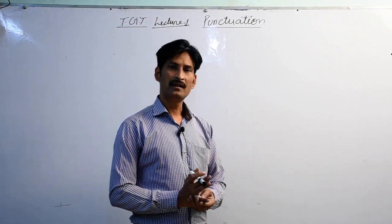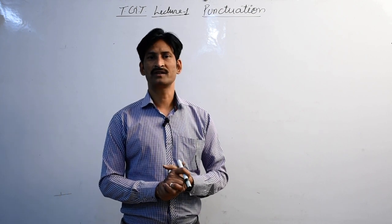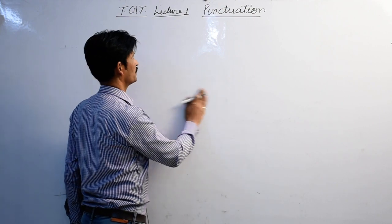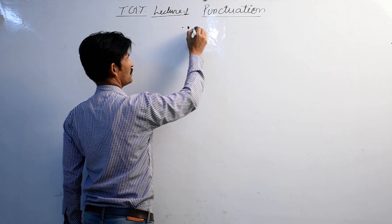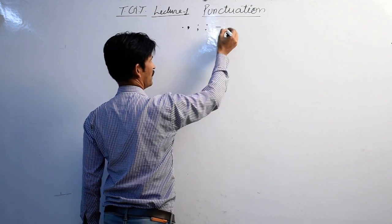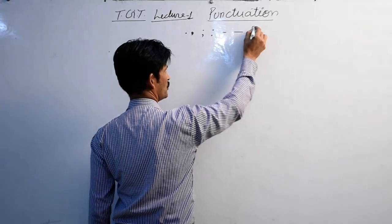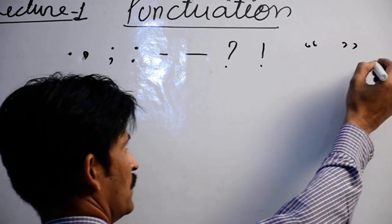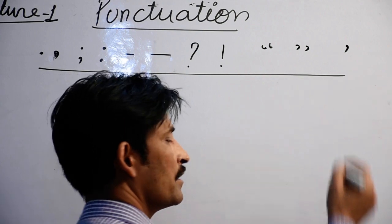As far as my reach is concerned, I will try to explain what punctuation is. So, as you know, a full stop comes, a comma comes, a semicolon comes, a colon comes, a hyphen comes, a dash comes, a question mark comes, an exclamation mark comes, an inverted comma, and an apostrophe. These are all punctuation symbols and marks.